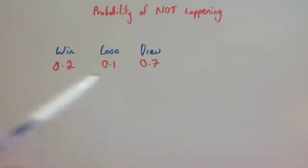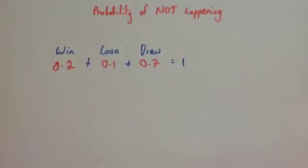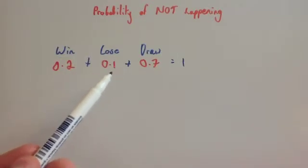Notice all these probabilities will add together to give you 1. So whenever you've got an event and you've got all the possible outcomes, those outcomes, the probabilities will always add together to give you 1. So if you want to know the probability of something not happening, so if I said it was the probability of not winning, that would be the probability of losing or drawing.